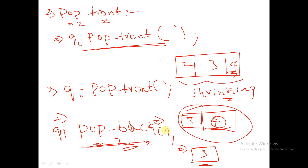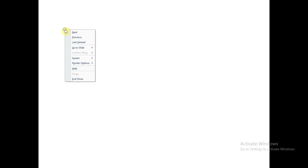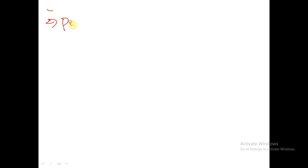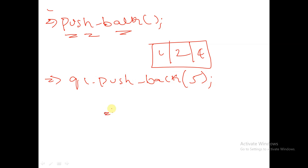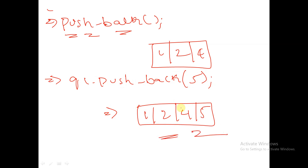Is this clear for everyone? If you are having any doubts, you can ask me. Using push_back, we can push elements into the queue from the back. If we have a queue say 1, 2, 4 and we use q1.push_back 5, then 5 will be inserted from the back: 1, 2, 4, and 5. These are some of the built-in functions in queues. If you are having any doubts, you can ask me.